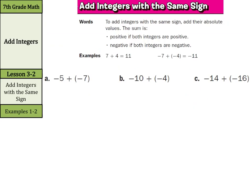In our first example, we have negative 5 plus negative 7. You may have done some work with counters — I have negative 5 and I have negative 7, so I have a total of negative 12. The better way now is to go: negative 5 and negative 7 are both negative, same sign. So just go, what is 5 plus 7? Well, 5 plus 7 is 12, and both are negative, so that's negative 12. If you have the same sign, just add and keep the sign.